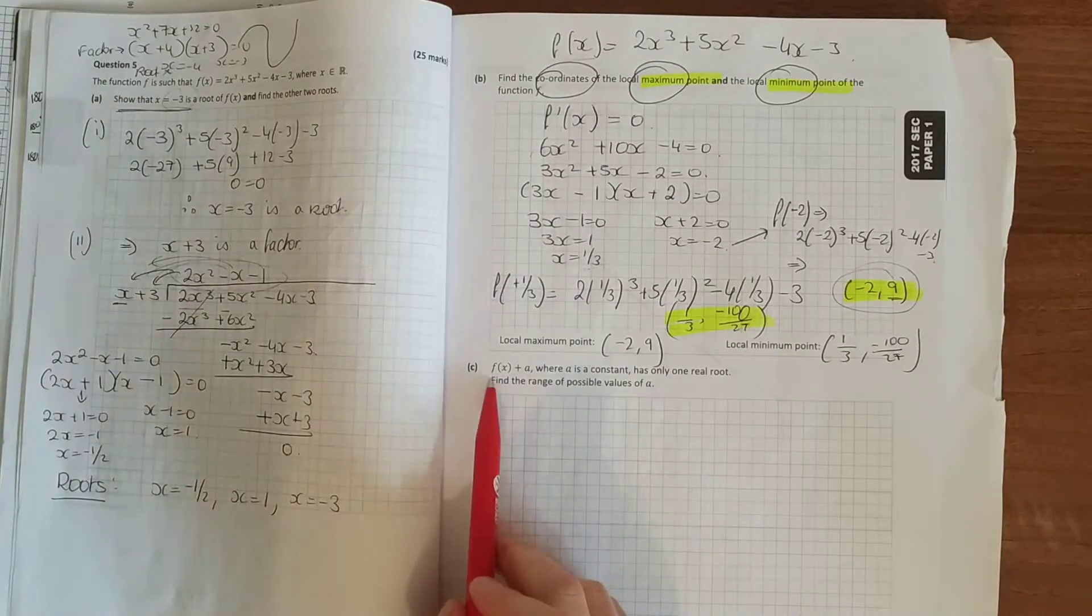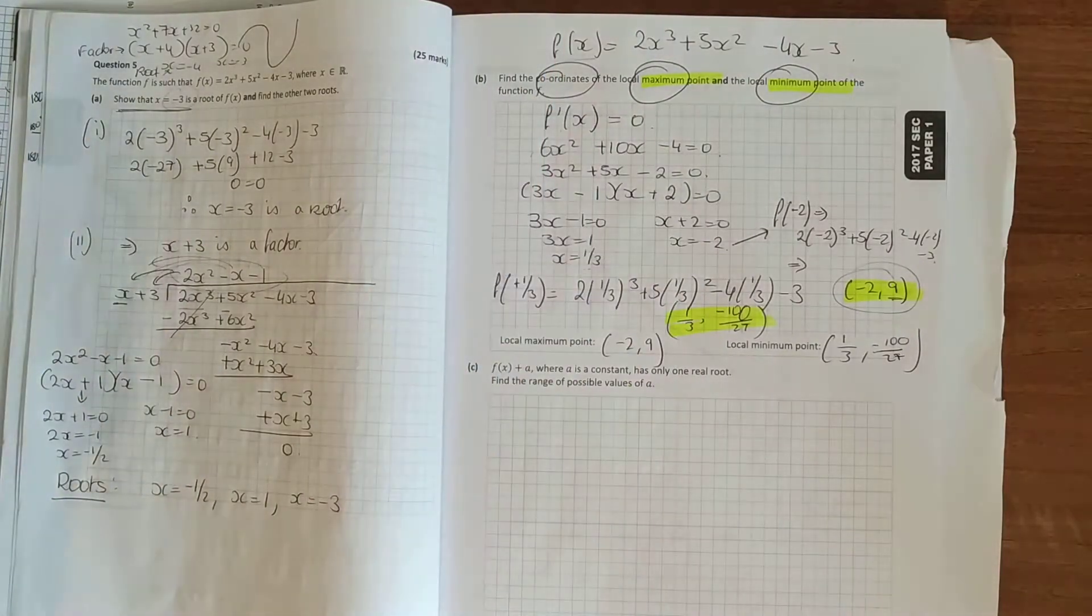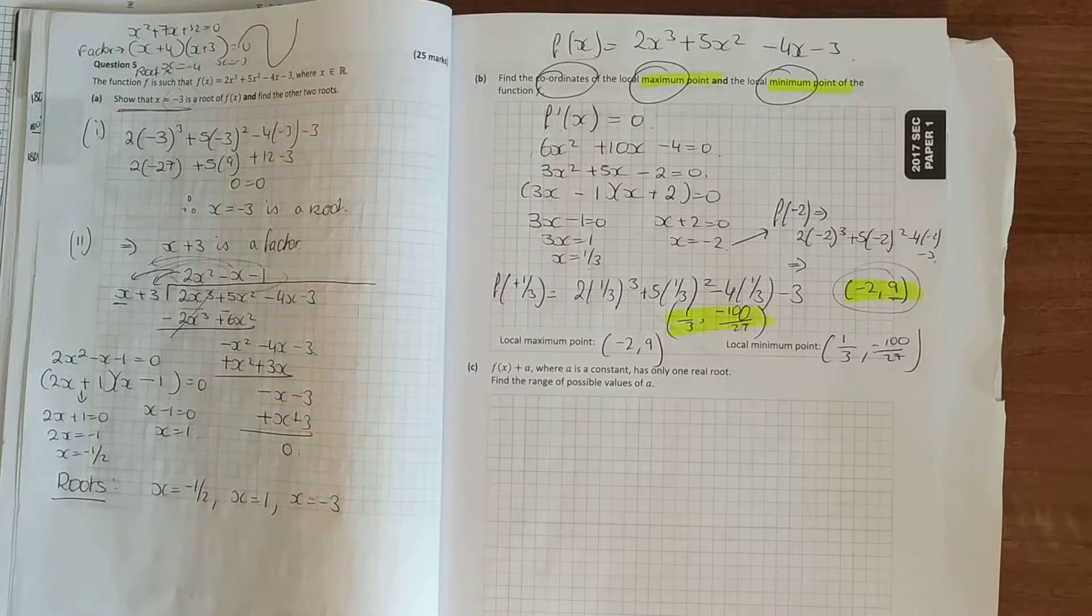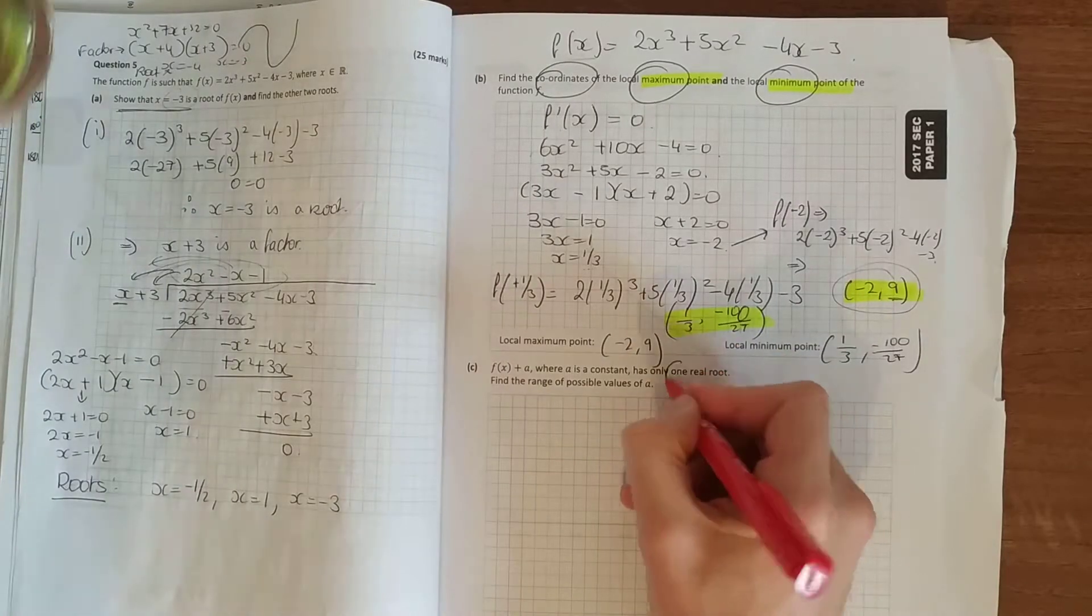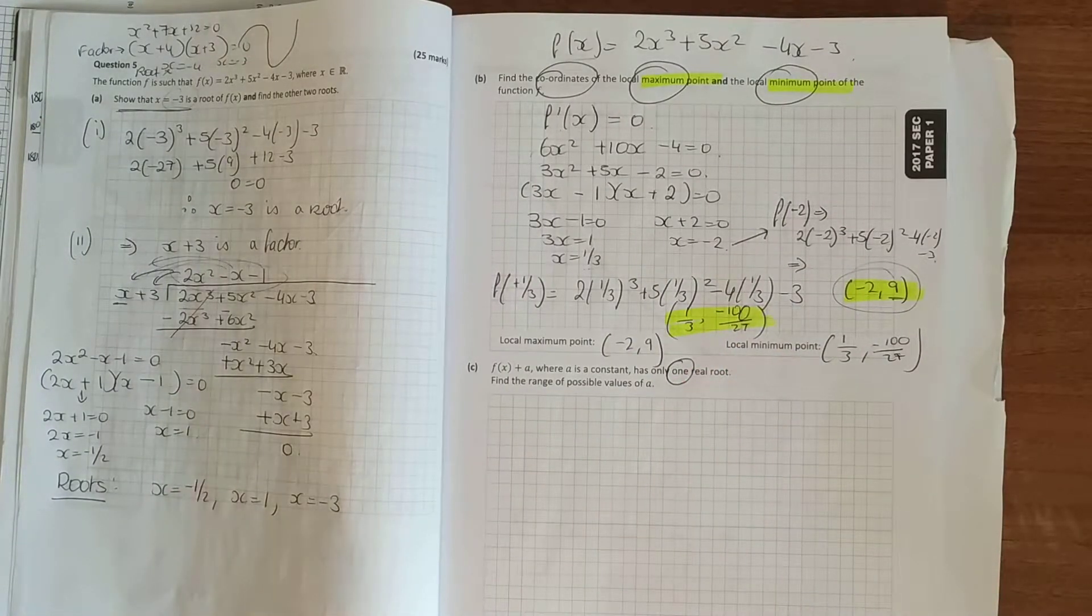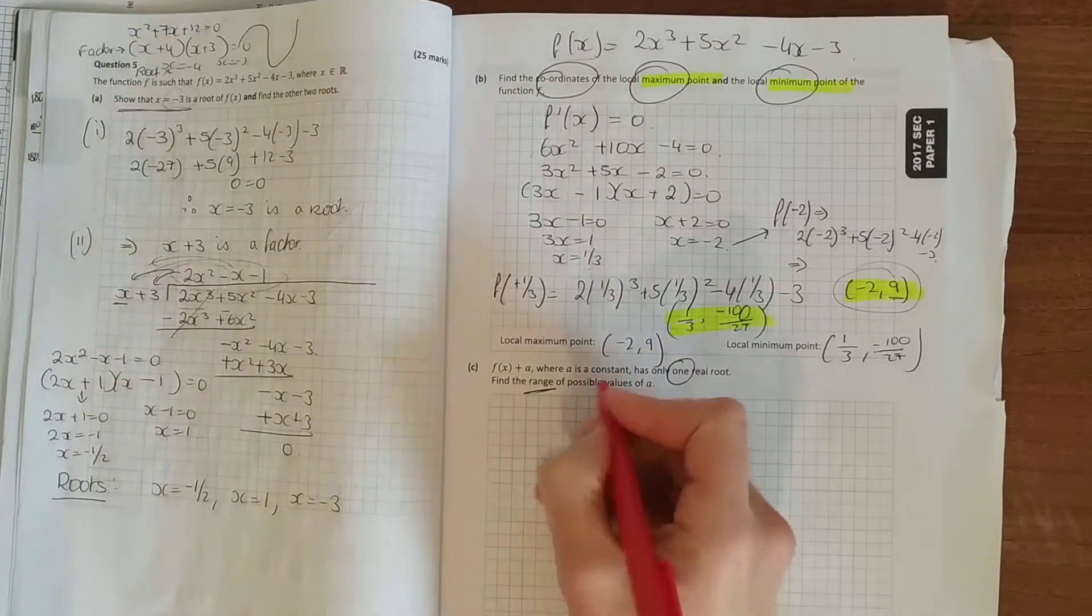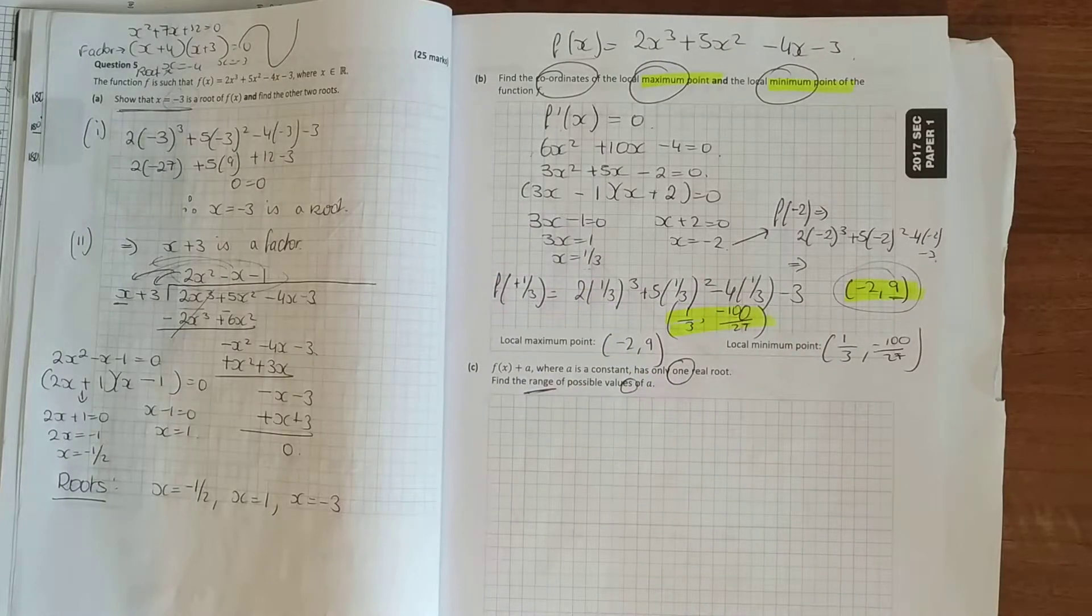And then the last thing. f(x), which is your original function, plus a. So plus a number has only one real root. Once you see one real root, that means it cuts the x axis at one point. So find the range of possible values. So values here again. Suggestion, two answers of a.